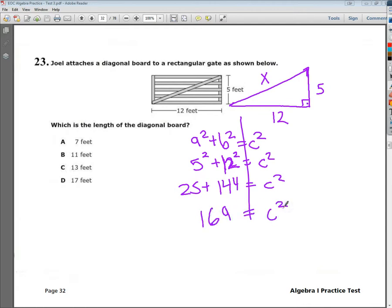And from here, I need to remember that the last step of any Pythagorean theorem is to take that square root. So I'm going to take the square root so I can get the value of c and not c squared. So I end up with 13. So the answer to 23 is c.